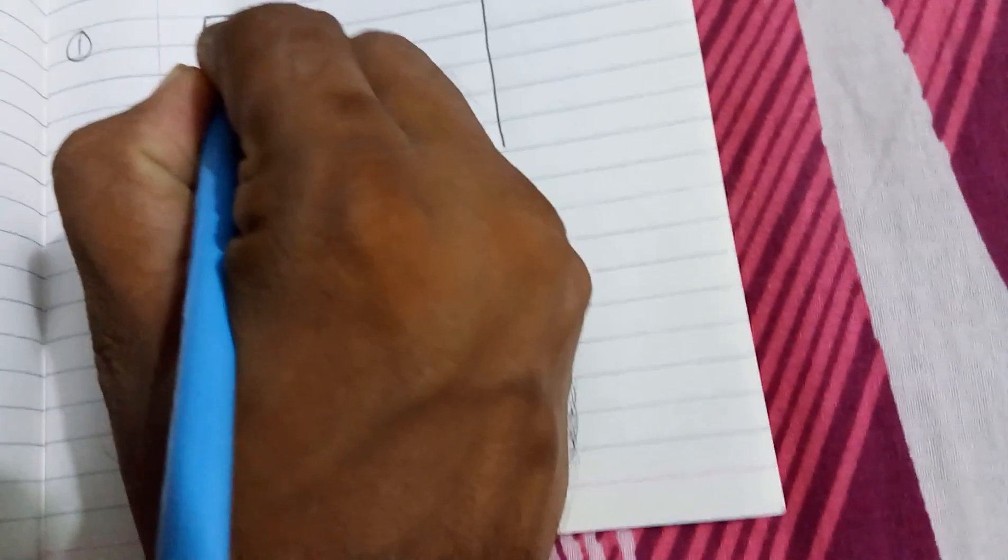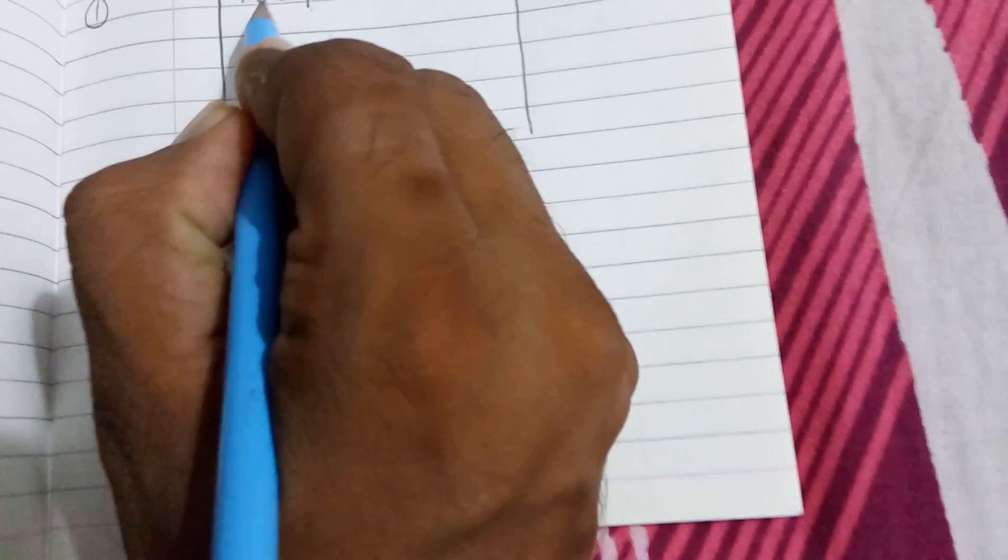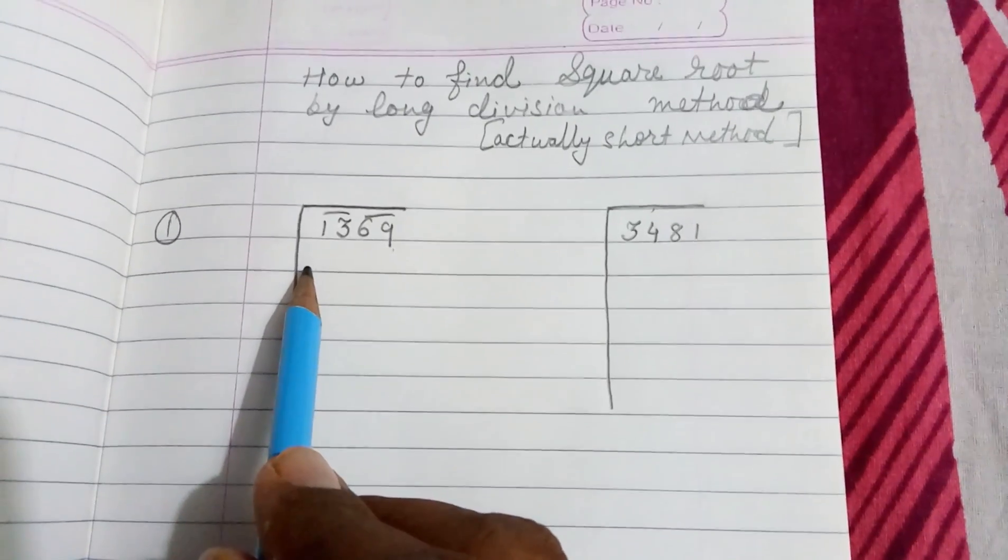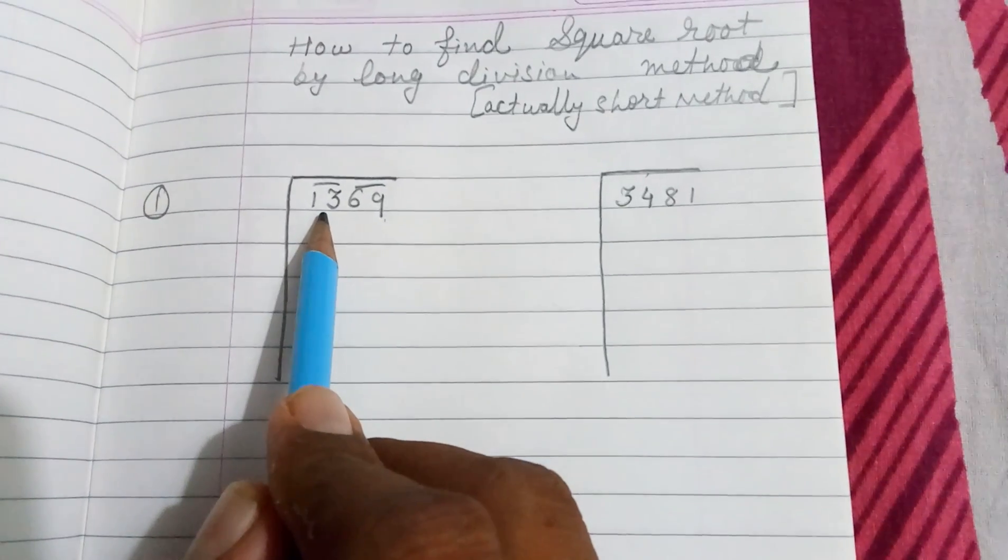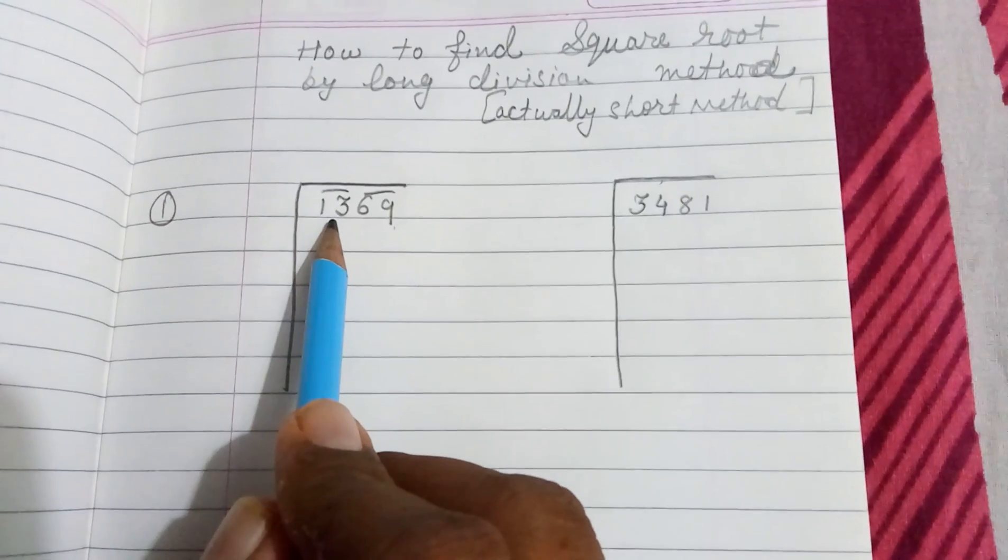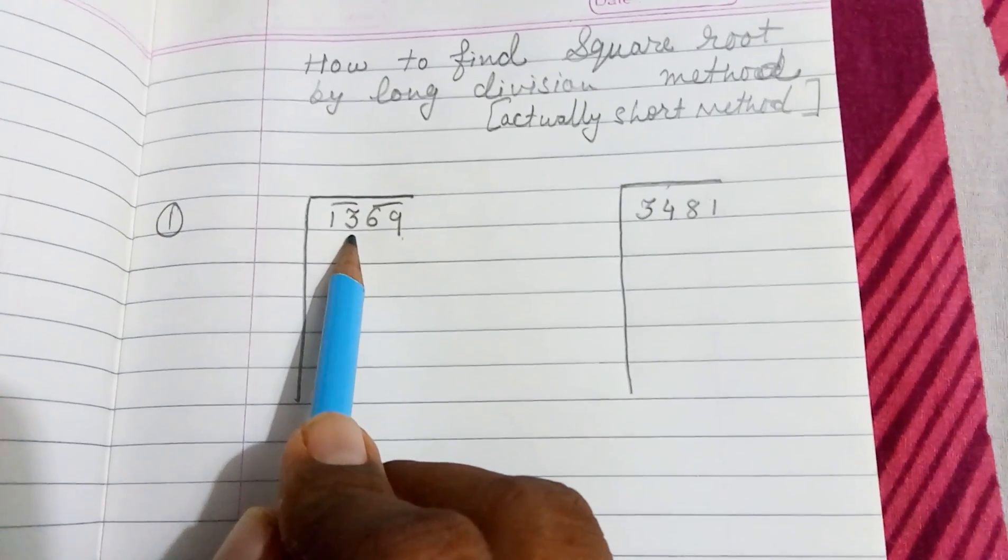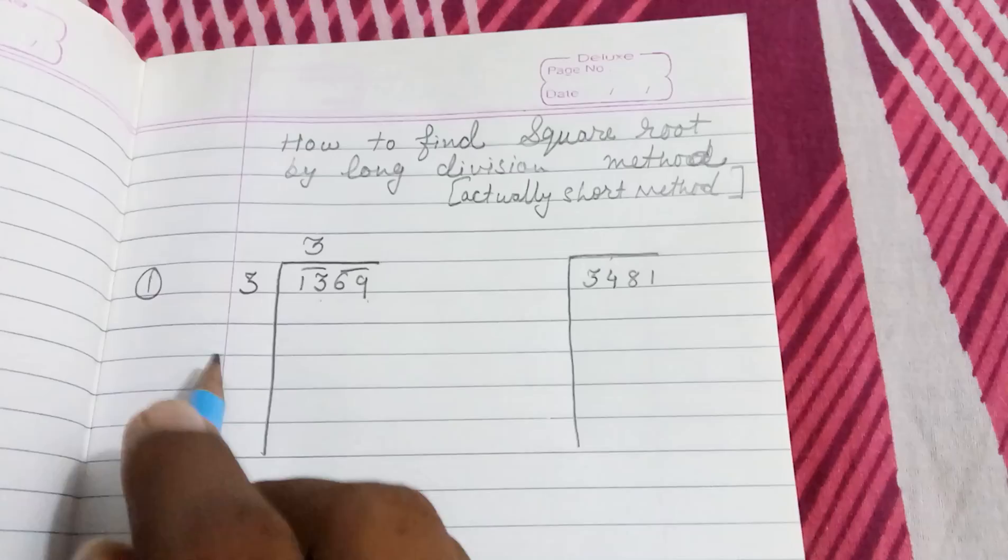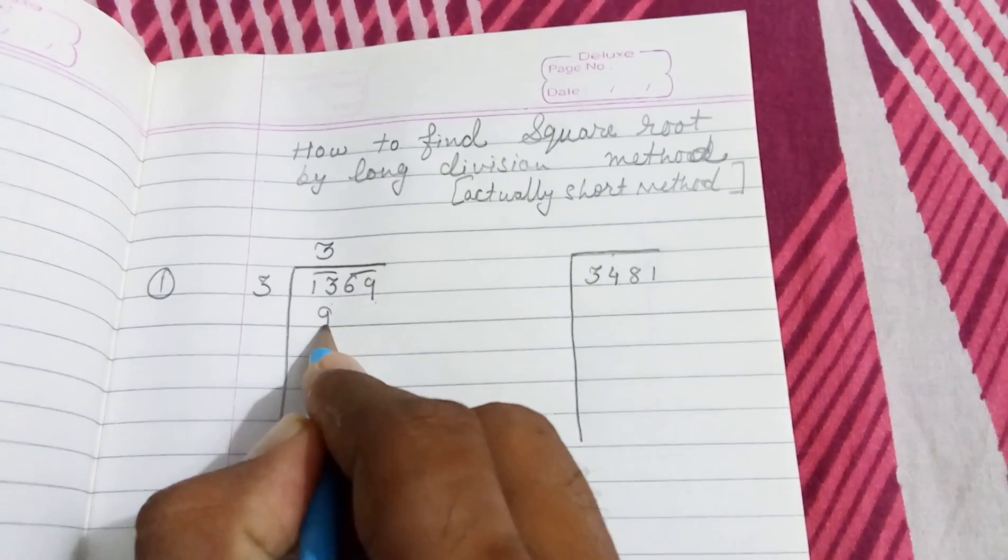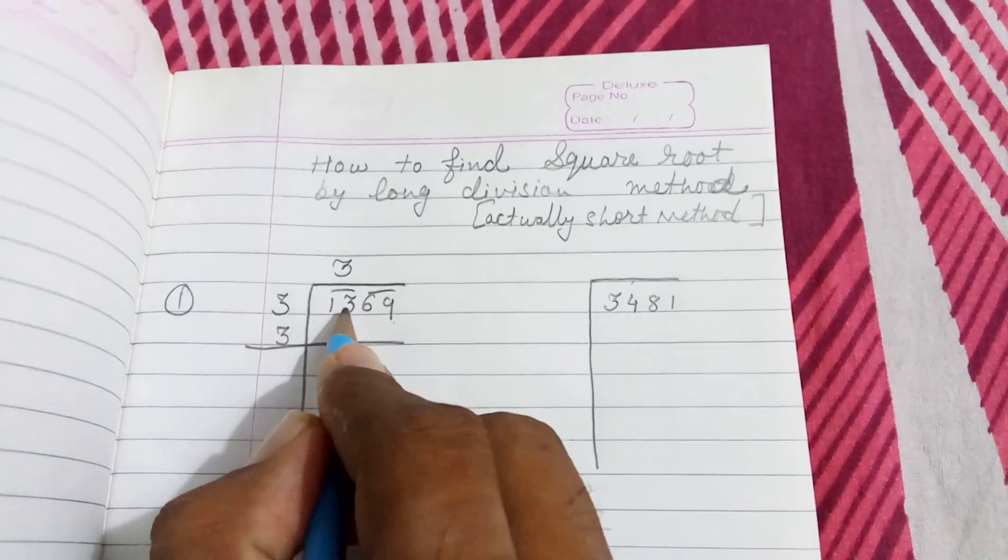The nearest perfect square number of 13 will be, you know that 2×2 gives you 4, 3×3 is 9, 4×4 is 16. So 16 is greater than this, so we are going to take 3×3. 3 multiply with 3 gives you 9. You have to take 3 also here. Then subtraction: 13 minus 9 gives you 4.